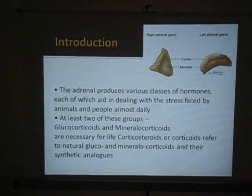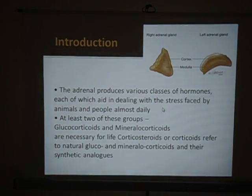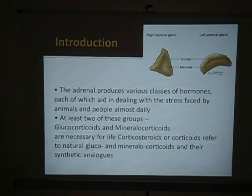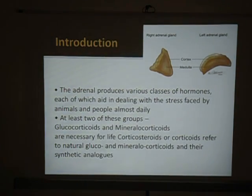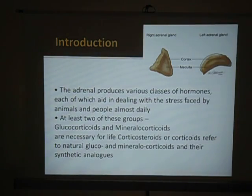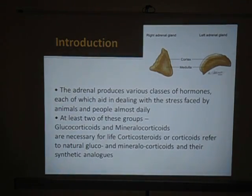What are these adrenal glands? The adrenal gland produces various classes of hormones which aid in dealing with stress. Do we remember the stress-related hormones our body releases? The fight-or-flight hormones — epinephrine and norepinephrine. Along with those, there can also be release of corticosteroids. At the time of stress, corticosteroids are released from stimulation of the adrenal gland; they counter-regulate and increase the blood glucose level. There are two types: glucocorticoids and mineralocorticoids.